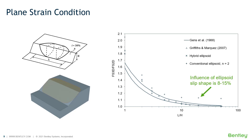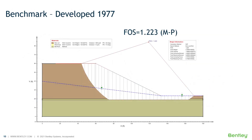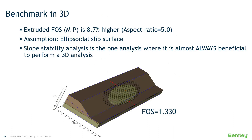This can be shown through simple analysis. Even though theoretically you can extend a three-dimensional slip surface long enough in the third dimension to collapse down to a 2D, in the real world that is not practical. For an example benchmark originally published in 1977, you get a factor of safety of 1.22 through the Morgenstern-Price method, with a water table and a circular shape truncated by a weak layer and bedrock at the bottom. If you extend that shape out in three dimensions, the aspect ratio stabilizes at about 5.0, assuming an ellipsoidal slip shape.